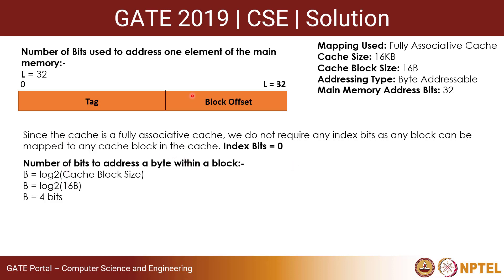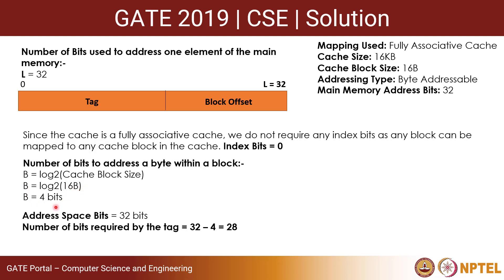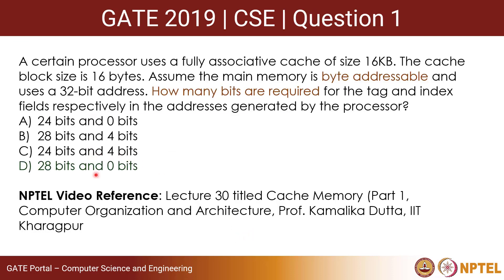The number of bits to address a byte within a block is log base 2 of the cache block size, which is log base 2 of 16, giving 4 bits for the block offset. The total address space is 32 bits; subtracting 4 bits for block offset leaves 28 bits for the tag. So the correct answer is option D: 28 bits for tag and 0 bits for index respectively. I hope you all get it. Thank you.